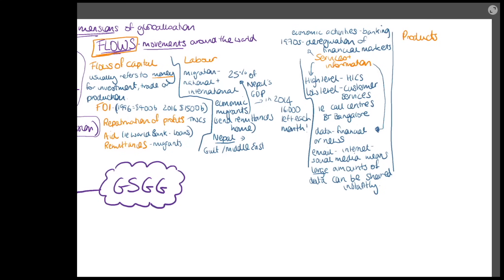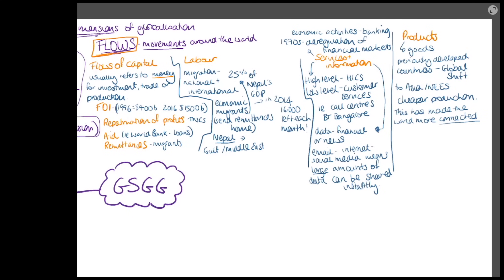Products are physical goods. Previously most trade in goods was between HICs, but with the global shift - the movement of manufacturing to Asia - there is now a lot of cheaper production in Asia and NEEs. Countries rely on each other to make products and sell them in different places. China is the largest manufacturing country: in 2018 it made 28% of all goods globally - almost a third.